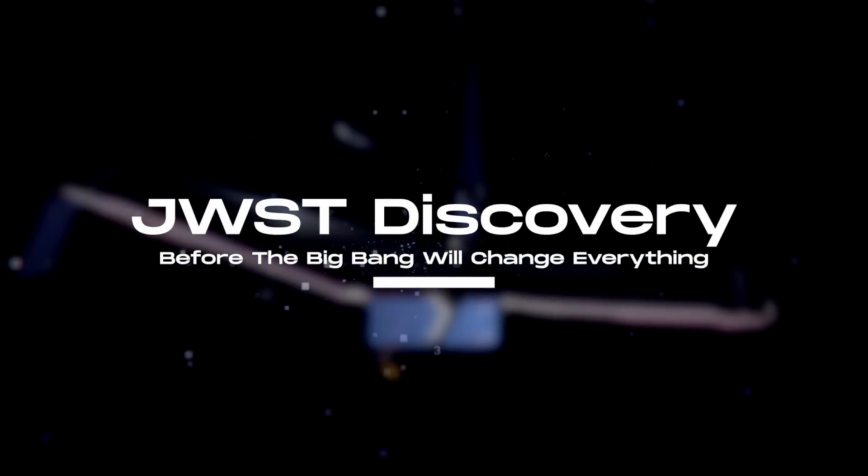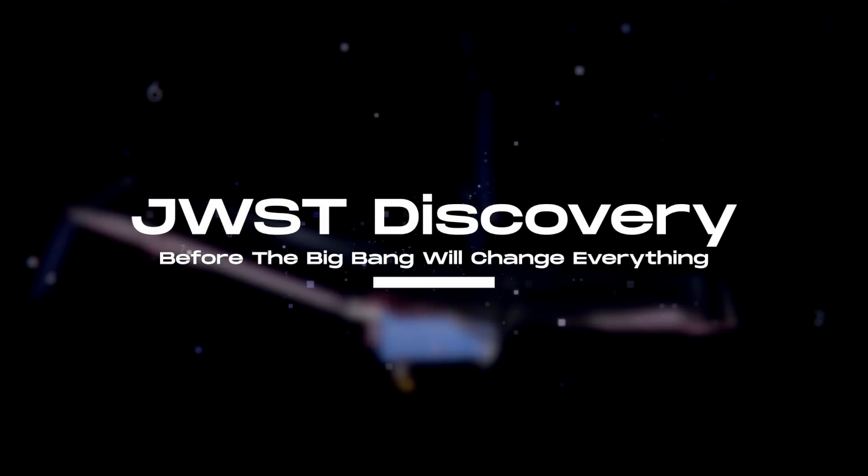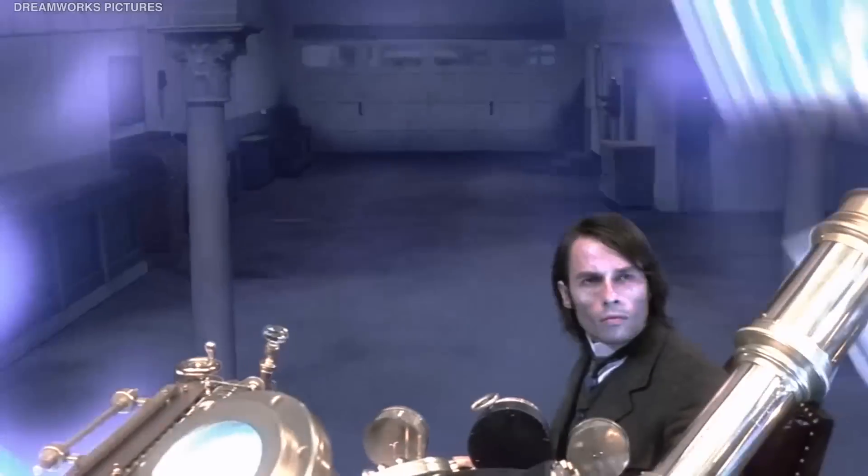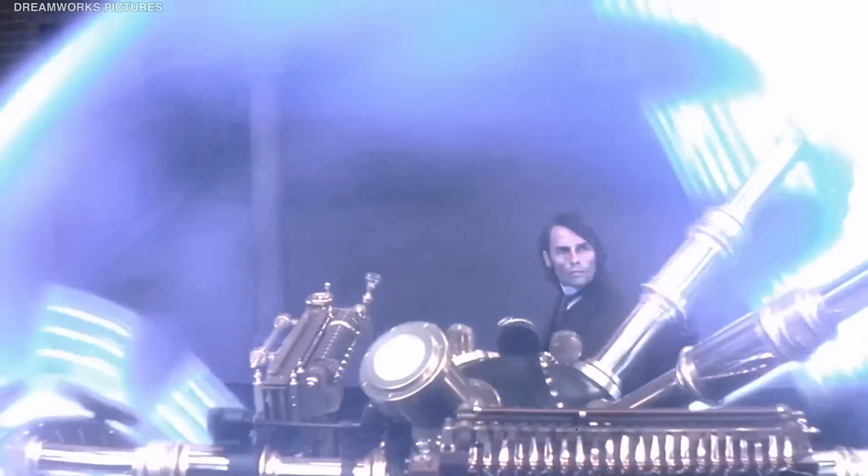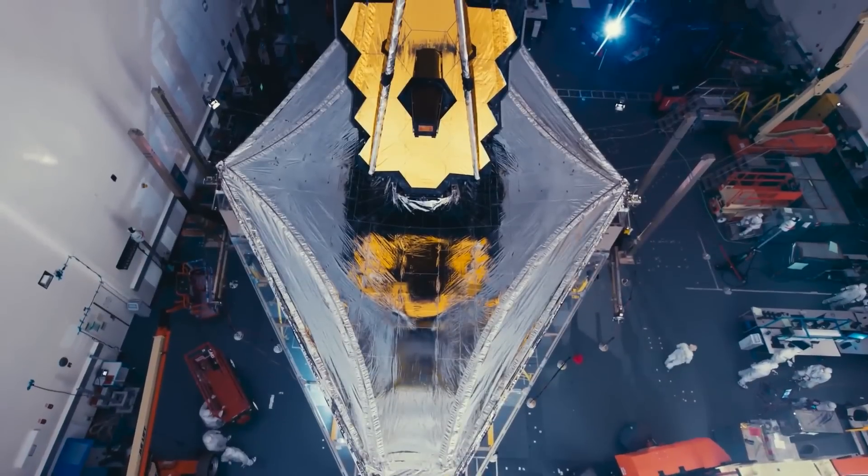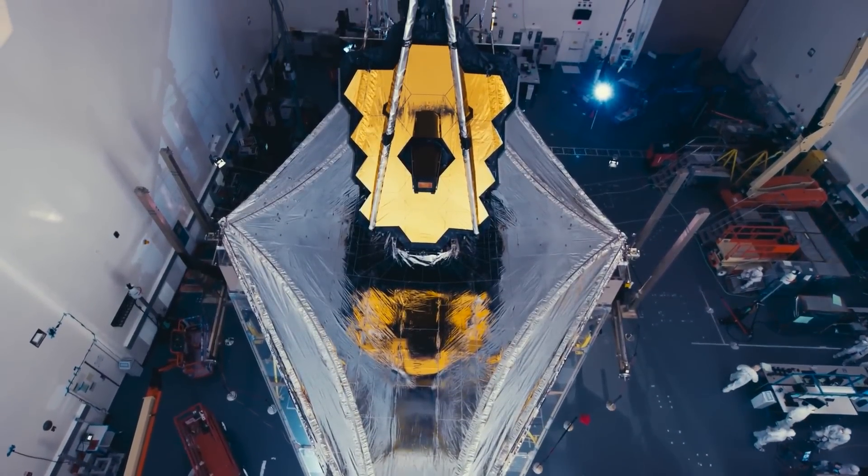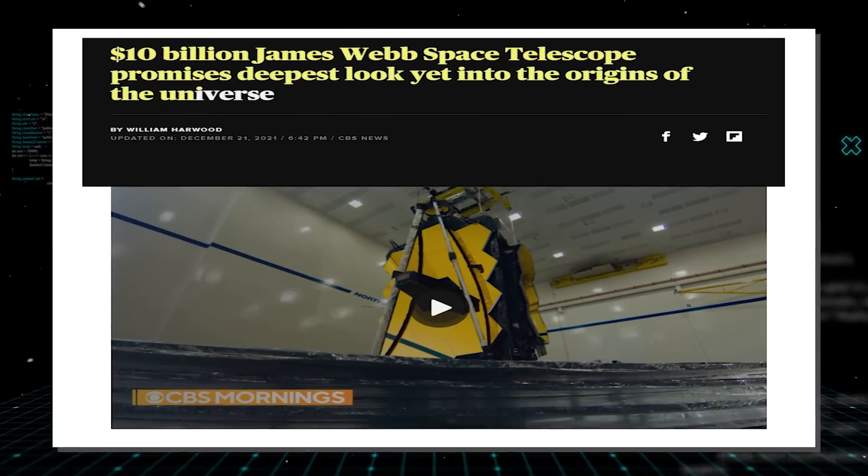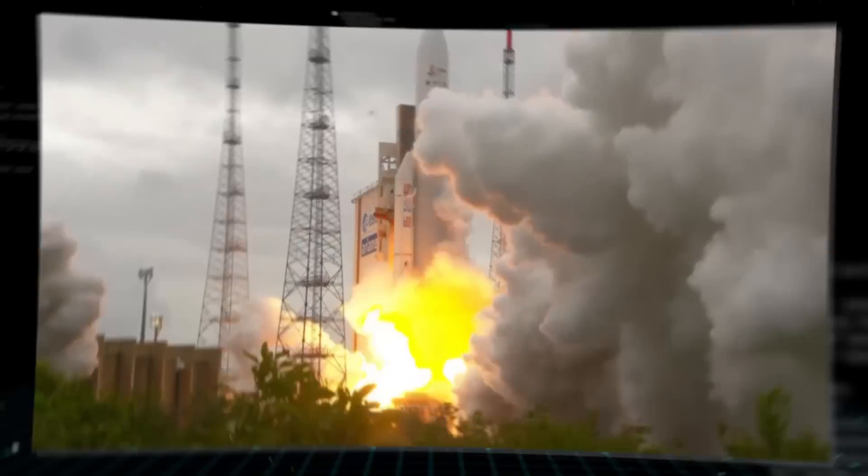In this video, we will show you how the new JWST will finally discover what happened before the Big Bang. What do you do when you want to look back billions of years? Build a time machine using exotic materials! The bright minds at NASA thought you should build a very expensive space telescope. So to understand the past and where we are coming from, NASA and its allies built a ten billion dollar telescope and launched it deep into space.